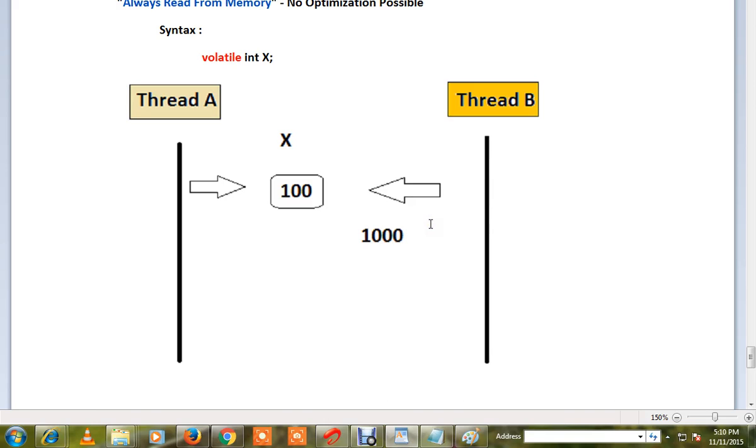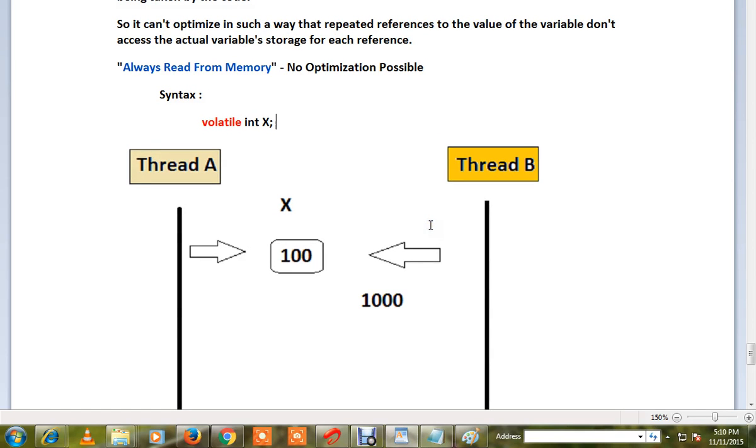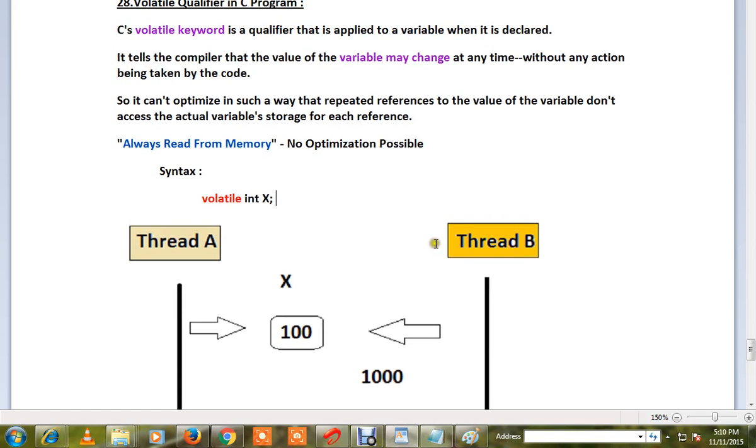Thread A does not know it has been modified, so it should always read from the memory. So no optimization is possible. The compiler will treat this variable in a special way, not like the other normal variables.